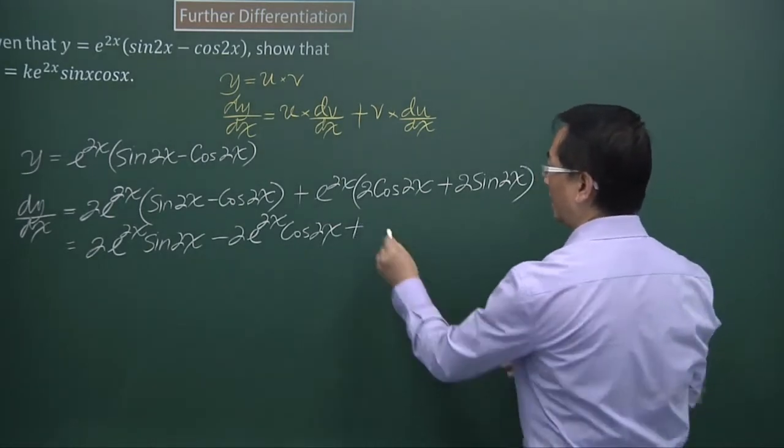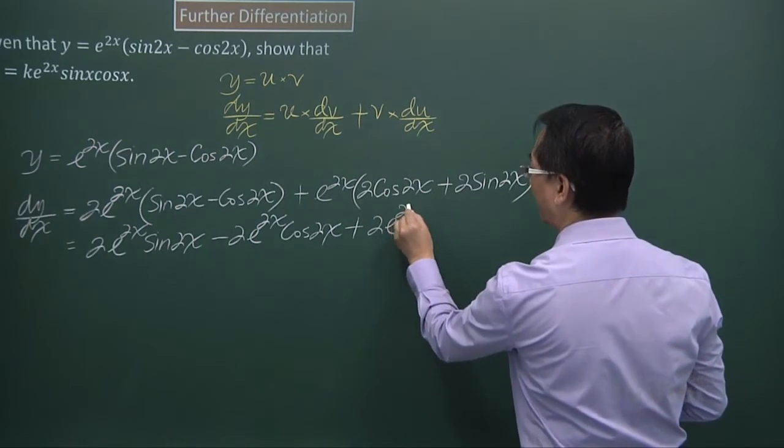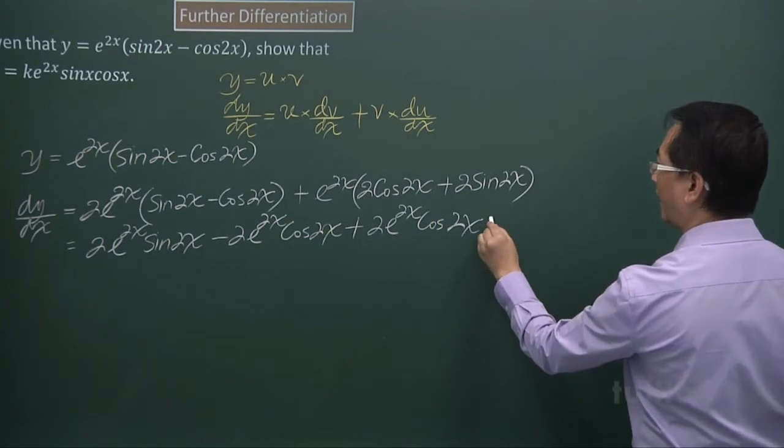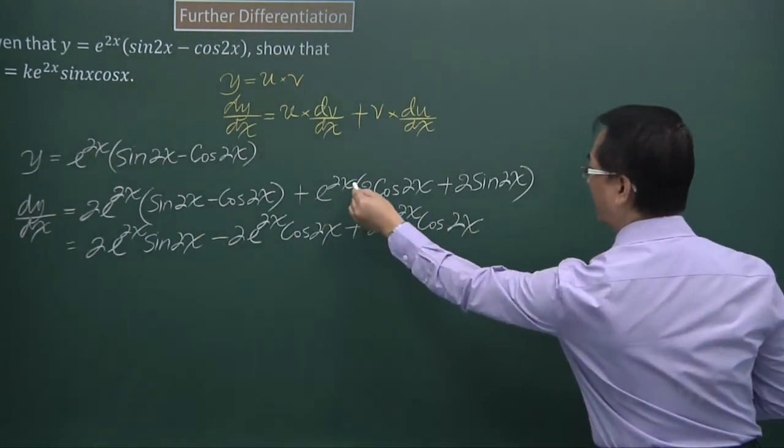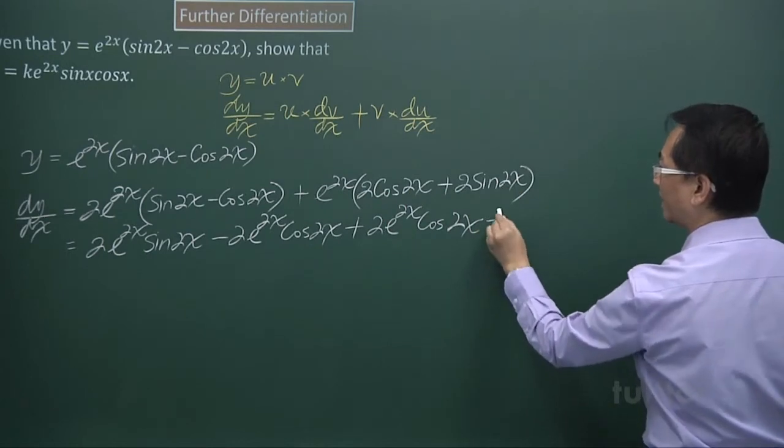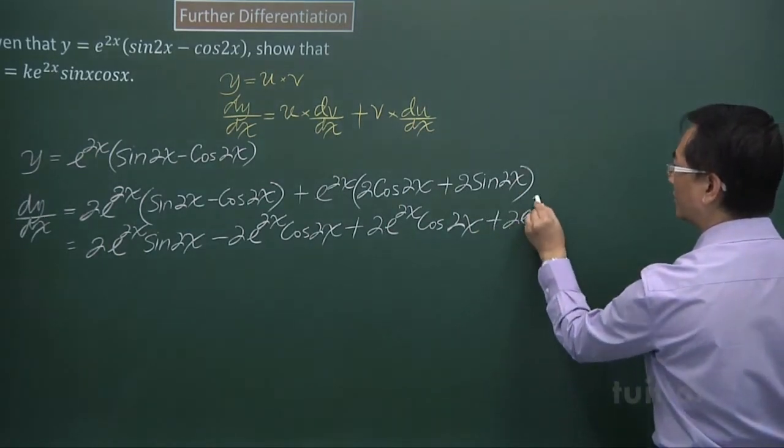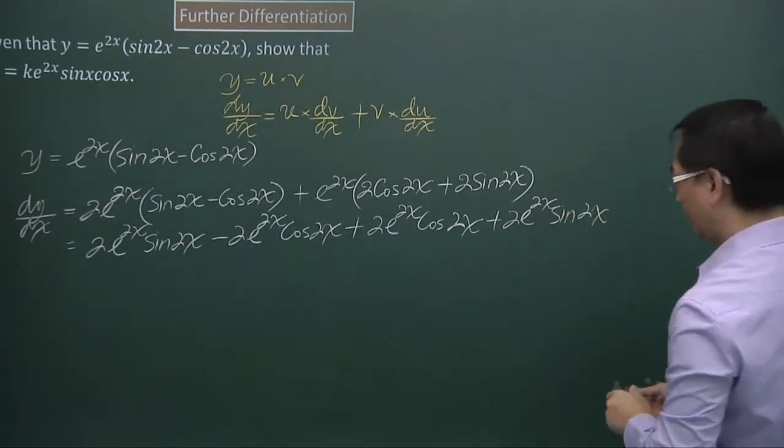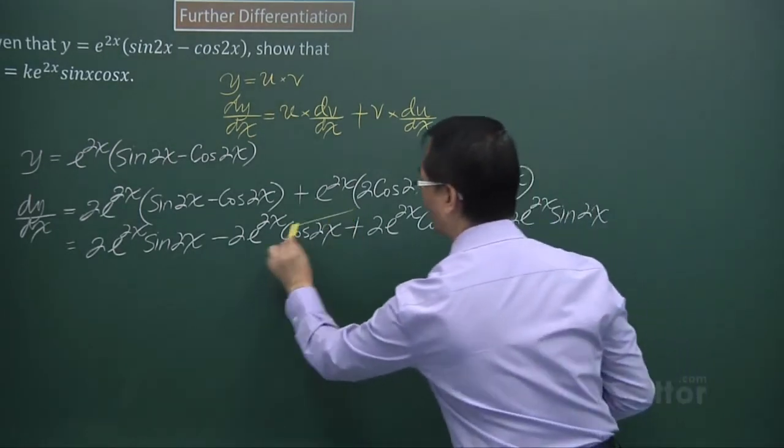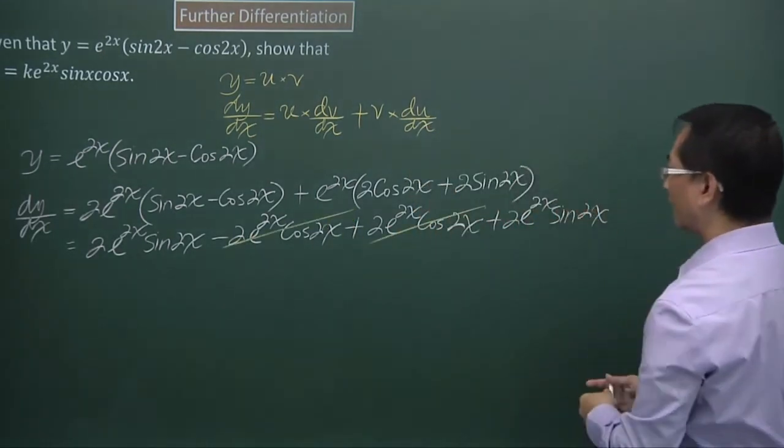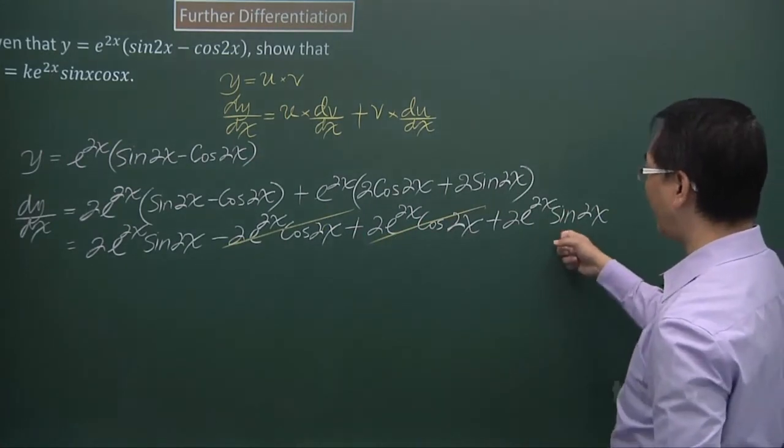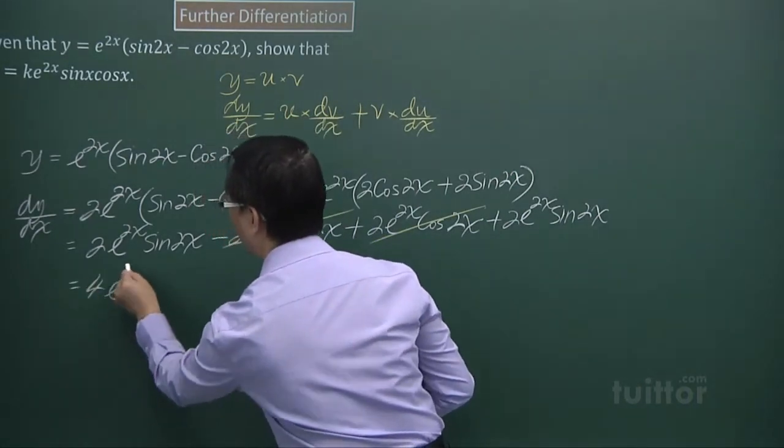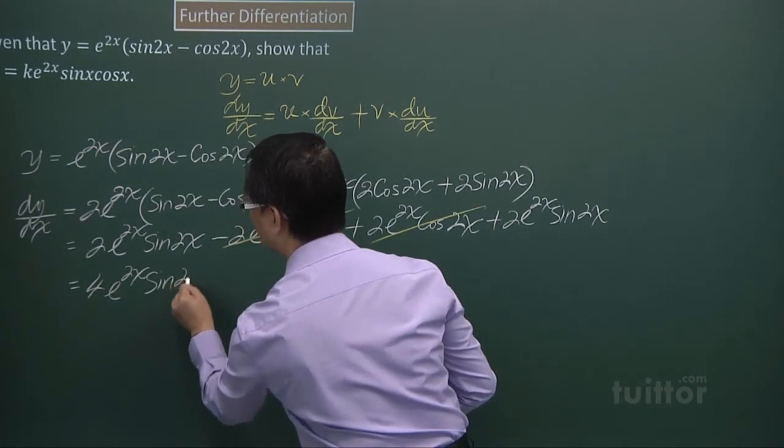Then take e to the power 2x times 2 sine 2x, I get 2 e to the power 2x sine 2x. Now these two terms will cancel off. So what I have in the end, these two are like terms, by adding up, I have 4 e to the power 2x sine 2x.